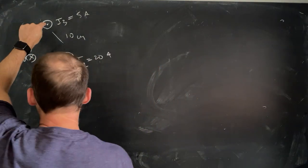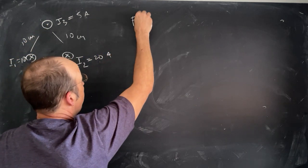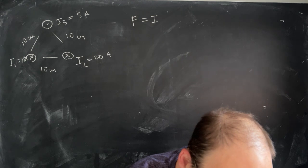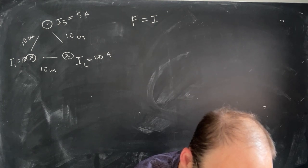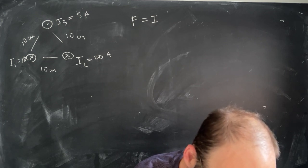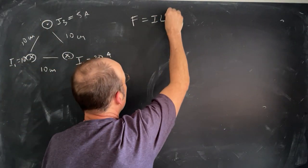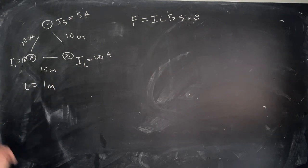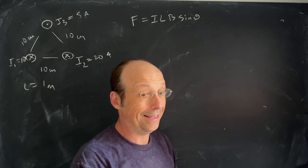Here's the plan: if I know the magnetic field at the location of this wire due to these two wires, I can say F equals I L B. But the problem asks for force and we can't find the force if we don't know the length of the wire. They tell us the distance of the wires but don't give L, so let's just pick L equals one meter to make things easier.